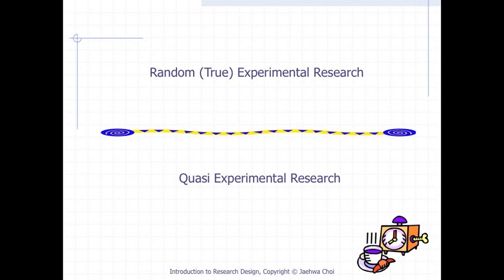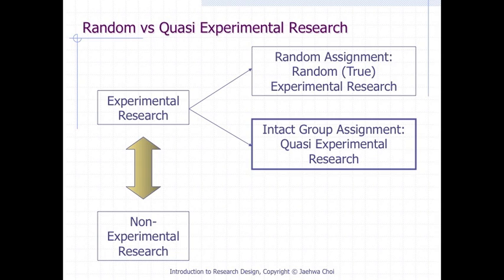So far we have learned random experimental research design. Now let's move on to quasi-experimental research design. Again, the two types of experimental research are random or true experimental research and quasi-experimental research. Both assign subjects into levels of the experimental variable — if randomly assigned, the design is true experimental; if non-randomly assigned, it becomes quasi-experimental.